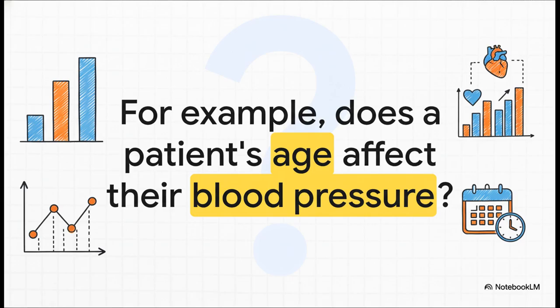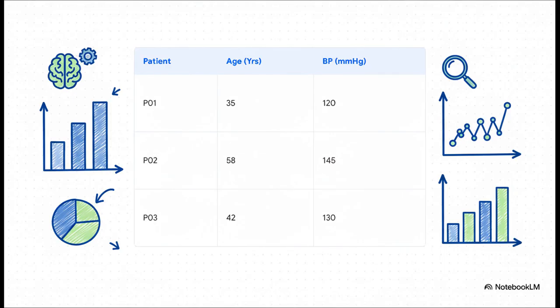For every single patient, you have two different numbers, their age and their blood pressure. A scatterplot lets you plot those two numbers together as a single point so you can step back and see if a pattern emerges. So here's how it works. You start with data that looks like this, one row for each patient, with a column for age and another for blood pressure. Patient 1, who is 35 with a blood pressure of 120, becomes a single dot on our graph. Patient 2, 58 with a pressure of 145, becomes another dot.